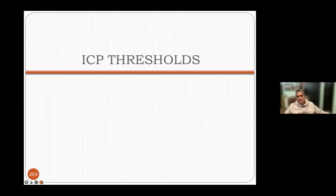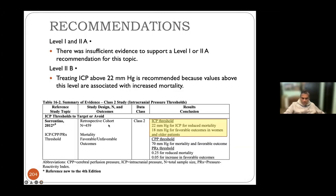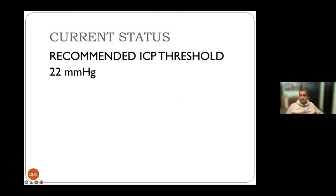ICP threshold: data has been available for more than 25 years. A study of 459 patients suggests an ICP threshold of 22 mmHg — ICP exceeding this is associated with increased mortality. For women and older patients, 18 mmHg may be appropriate. Current recommendation: ICP threshold is 22 mmHg, but one should become cautious and initiate all ICP control measures when ICP crosses 18 mmHg — not 22. The older threshold was 25 mmHg, so there has been a significant shift.